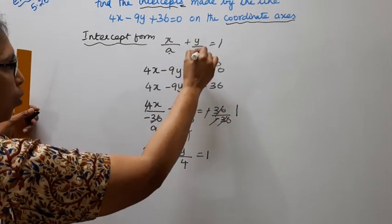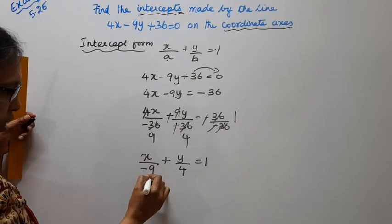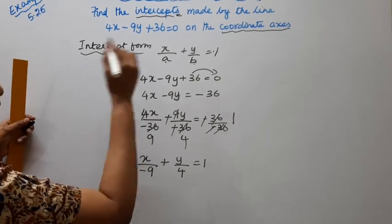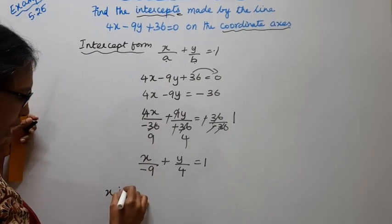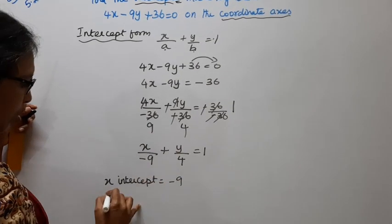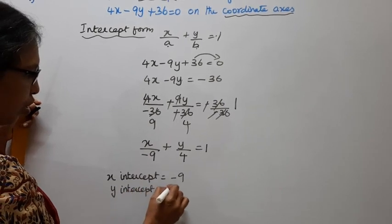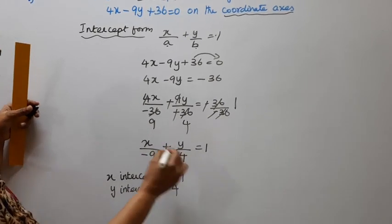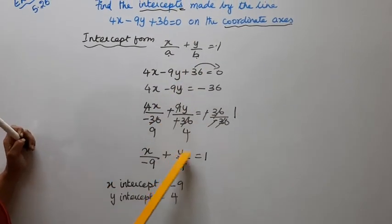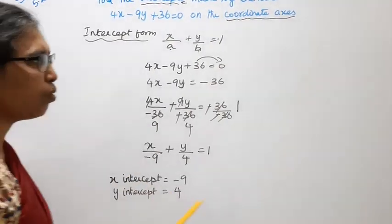Comparing with x by a plus y by b equal to 1, we get the x intercept as minus 9 and the y intercept as 4. This is our answer.